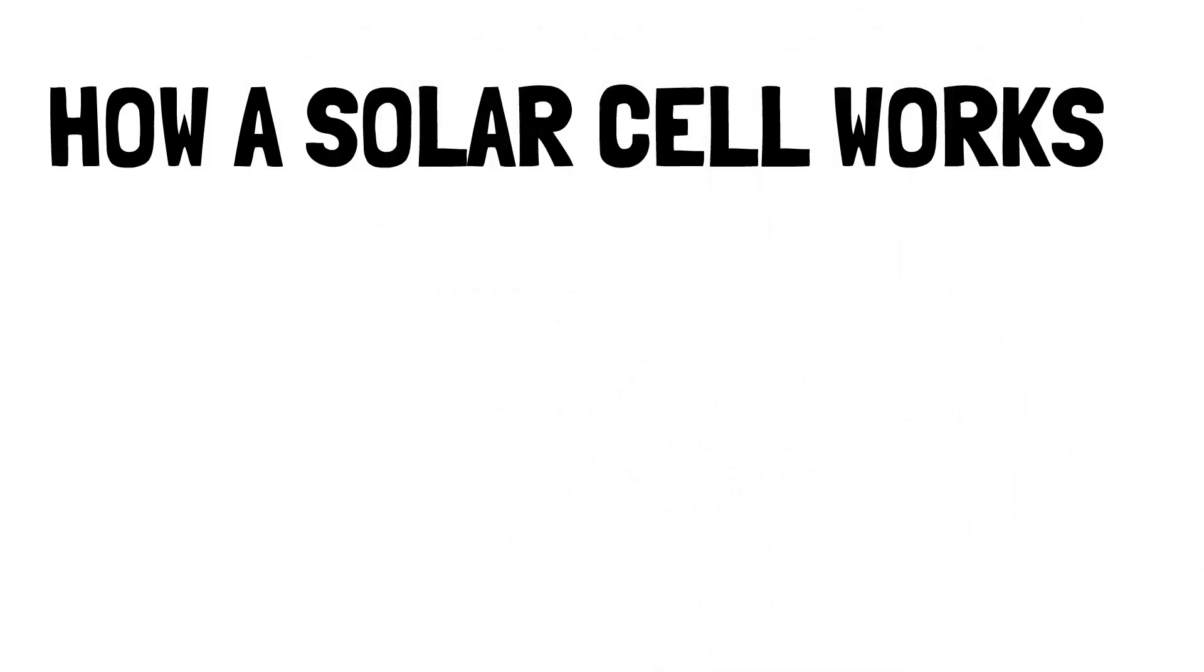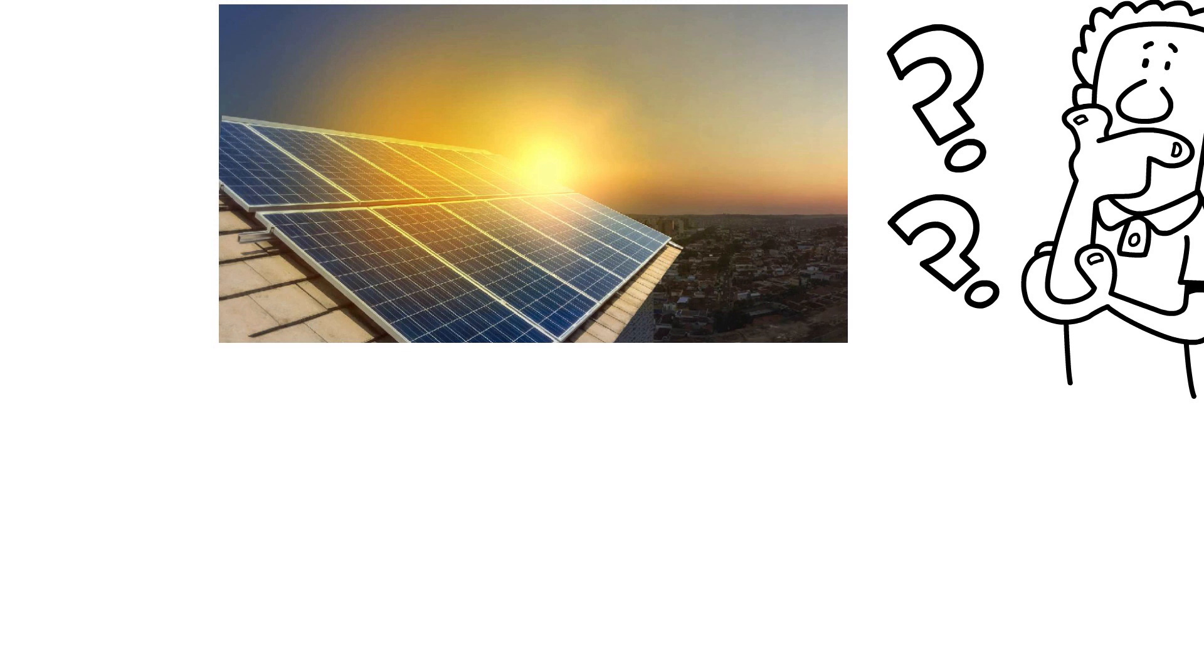Welcome to NBK Chem. Today we learn how a solar cell works. A solar cell is made of two types of semiconductors, called P-type and N-type silicon.